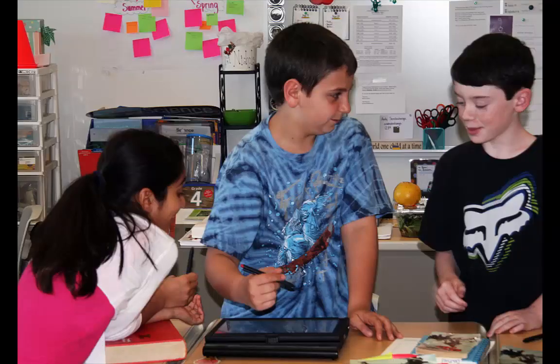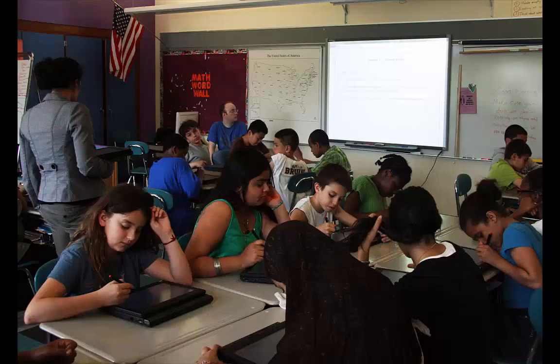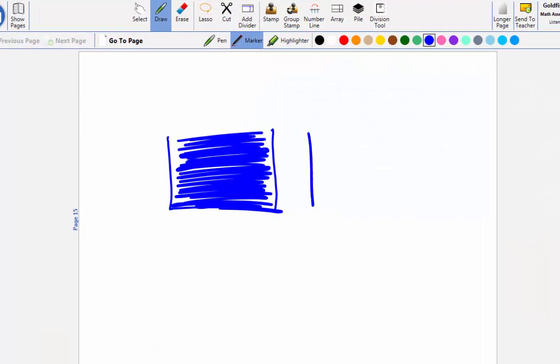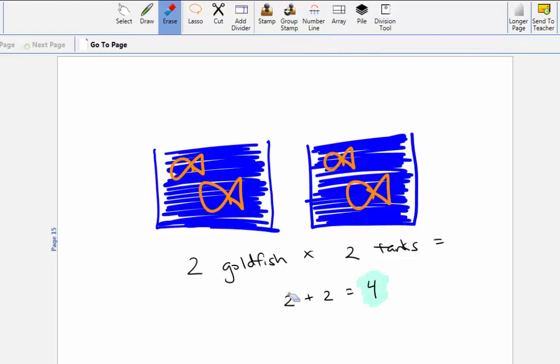Classroom Learning Partner, or CLP, provides students with tools to create representations of multiplicative structures. Students use the tablet's pen to draw, annotate, write, and highlight with a selection of colors, and easily erase their work.